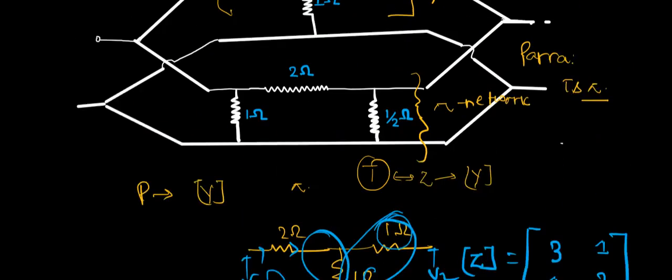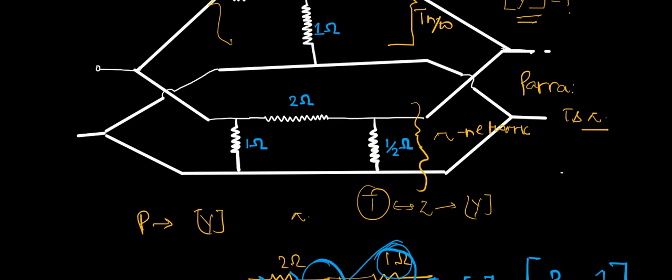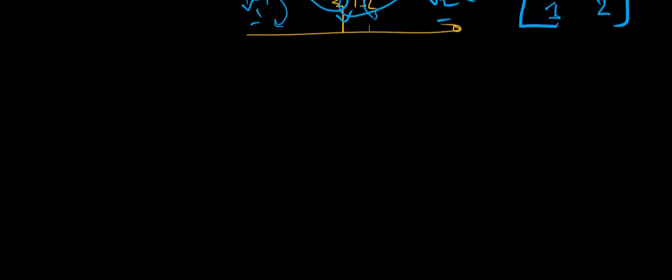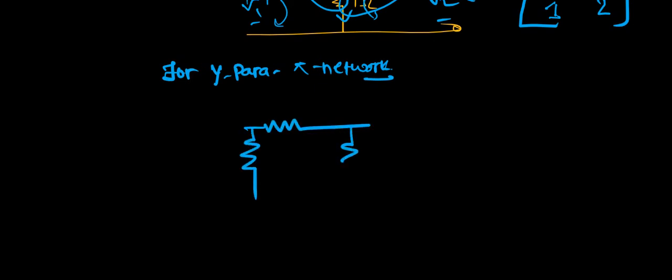Now for Y parameter, we have to calculate the value for a pi network with components 2 ohm, 1 ohm, and 1 by 2 ohm. It's easy to calculate the value of pi network. If we have to calculate the value of pi network, we will see 1 ohm here, 1 ohm, and 1 by 2 ohm.